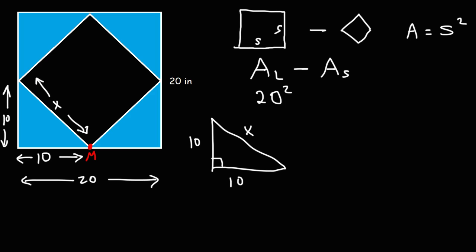One way we could solve this is to use the Pythagorean theorem. There's also another way if you know your special right triangles, but we're going to use the Pythagorean theorem for this example. It's a squared plus b squared equals c squared, where a and b are the legs of the triangle and c is the hypotenuse.